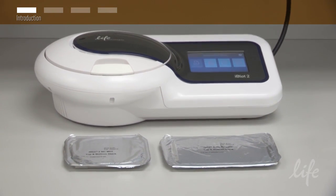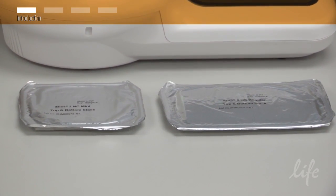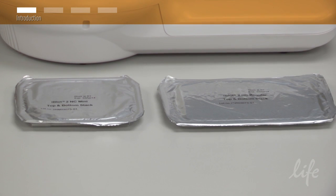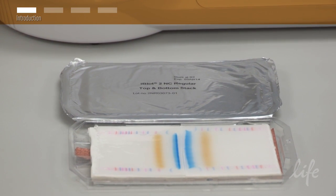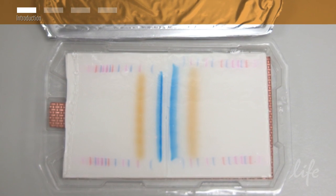The iBlot2 dry blotting system can transfer proteins from mini or midi sized gels. In fact, two mini sized gels will fit on a single regular sized iBlot2 transfer stack.